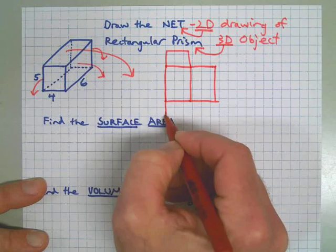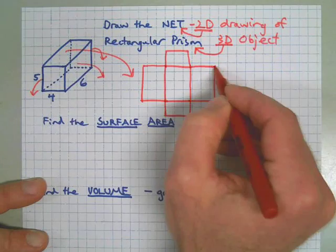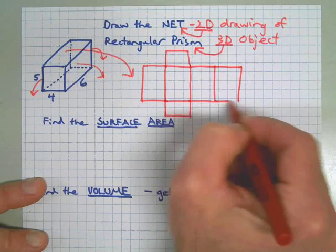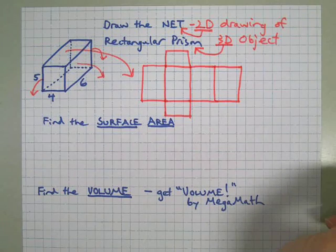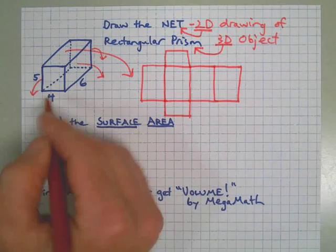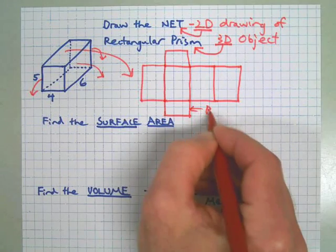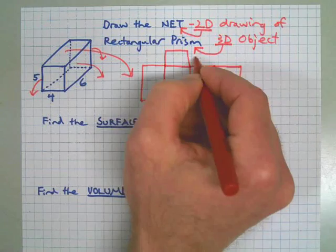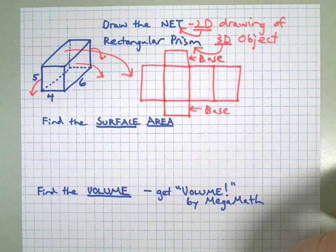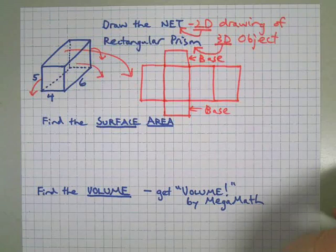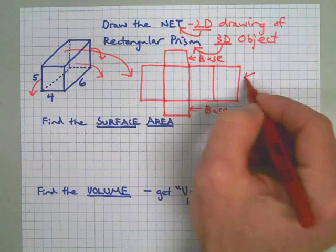Now your net drawing doesn't have to be anatomically correct and perfect, but it should capture all the possible surfaces of that prism if you unfolded it and laid it flat. So here we've got the base here and the other base. Every prism has two bases and it doesn't matter which is which.